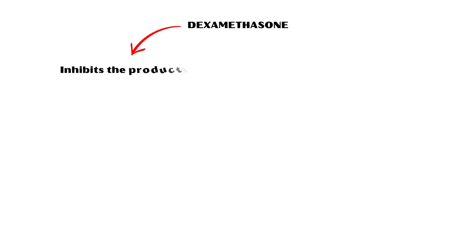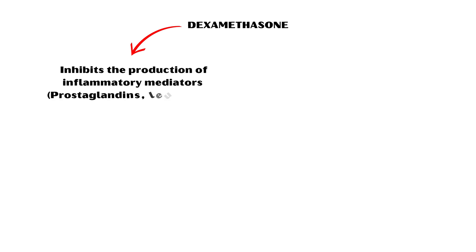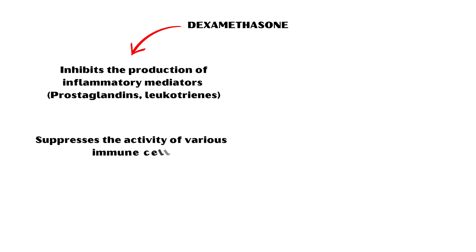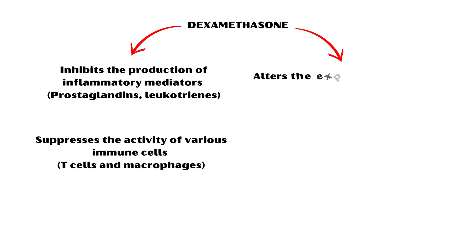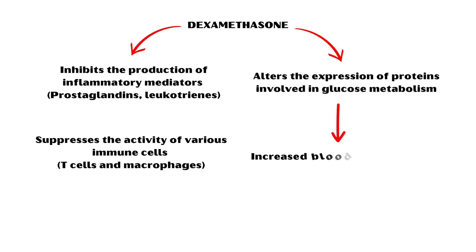Dexamethasone inhibits the production of inflammatory mediators, such as prostaglandins and leukotrienes, and suppresses the activity of various immune cells, such as T-cells and macrophages. Additionally, it alters the expression of proteins involved in glucose metabolism, leading to increased blood glucose levels.